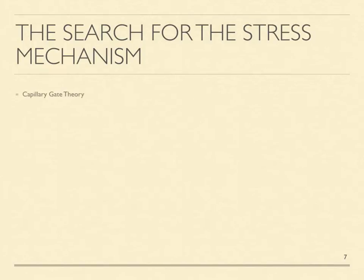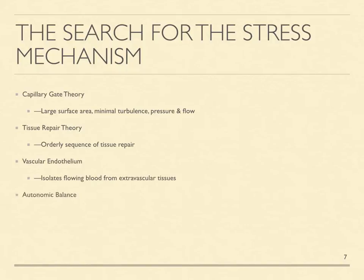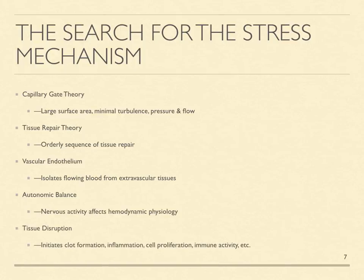Stress researchers developed two important theories to explain the nature of Selye's mechanism. They knew that capillary surface area is greater than all other vessels combined, and that capillary turbulence, pressure, and flow are all minimal, so they postulated that a submicroscopic capillary gait mechanism regulates capillary flow — this became known as capillary gait theory. They also postulated that a single mechanism orchestrates the orderly sequence of tissue repair, known as tissue repair theory. They suspected that the vascular endothelium was the focus of stress mechanism activity and that the autonomic nervous system regulates its activity. As we shall see, all these ideas anticipated various elements of the mammalian stress mechanism.